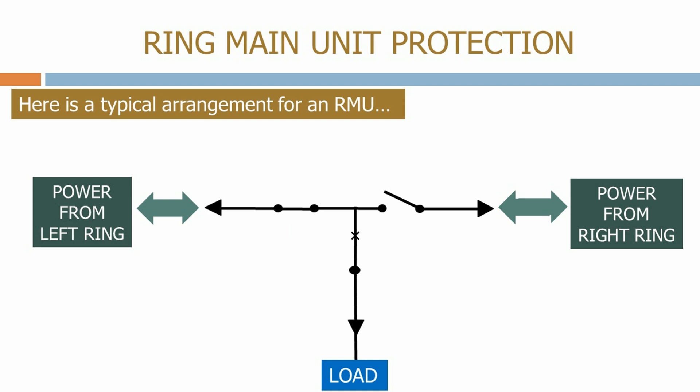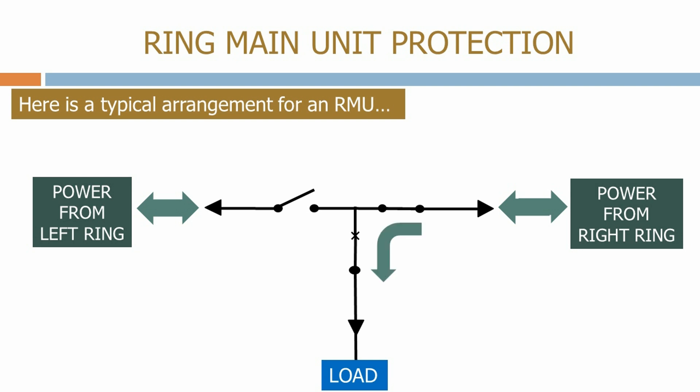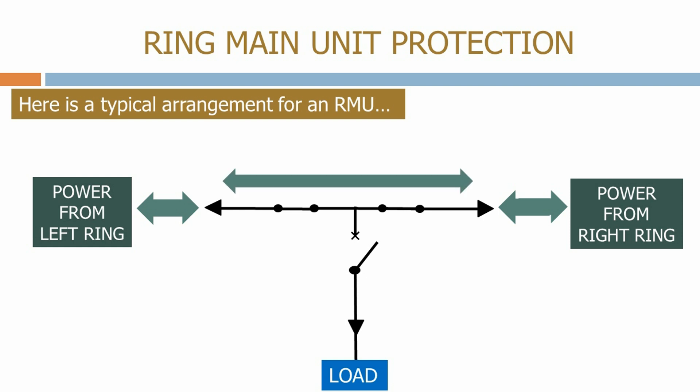The isolators are off-load devices, so to change the arrangement and feed power from the right hand ring we need to open the circuit breaker first. We then re-arrange the isolators, re-close the circuit breaker and we've now connected the load to the right hand ring. If there is a fault on the feeder or we need to disconnect the load, we can open the circuit breaker, close both isolators and connect the left hand ring and right hand ring together.